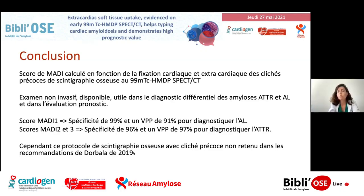Ce serait une proposition de nouvel algorithme. Mais la limite à ça, c'est que pour l'instant, tous les centres ne font pas de clichés précoces. Et je ne suis pas sûre qu'on ait encore suffisamment de preuves pour éliminer la preuve histologique dans le diagnostic d'amylose AL, puisqu'on n'est pas sur du 100%. Je pense qu'on doit encore rester à la preuve histologique en cas d'amylose AL.